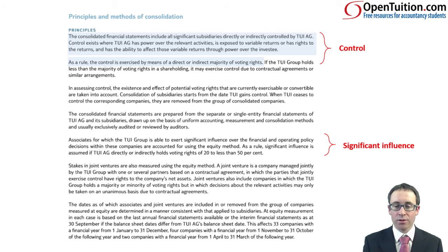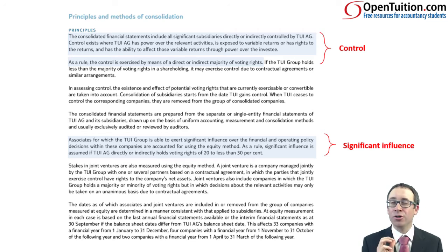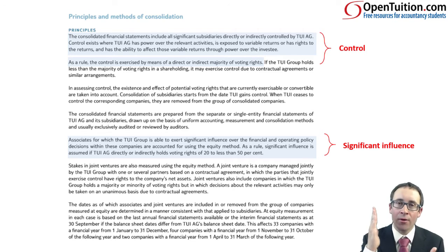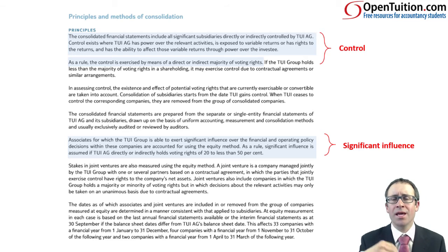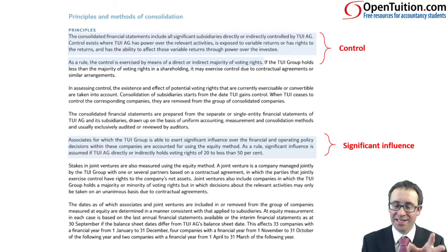Further down, it talks about influence — so obviously dealing with associates. Associates where the TUI Group is able to exert significant influence over financial and operating policies are accounted for using the equity method. It says that, as a rule, significant influence is assumed if directly or indirectly we have 20 to 50%. Obviously there could be situations where we own less than 20% — but maybe there are material transactions, key management personnel given to that entity, or seats on the board giving the power to participate. They're just saying 20 to 50% is definitely an associate.